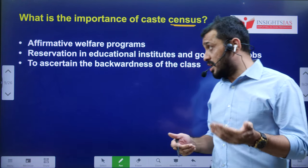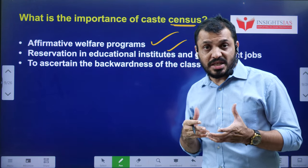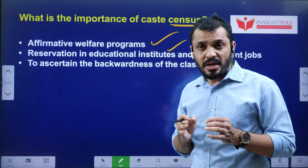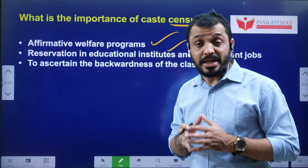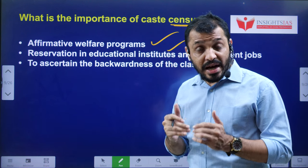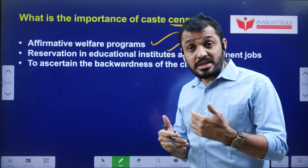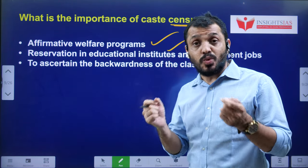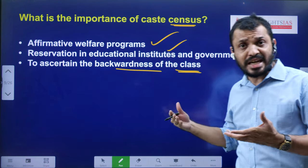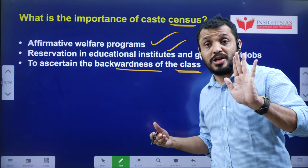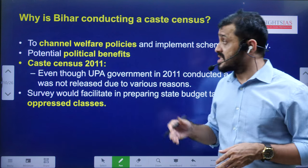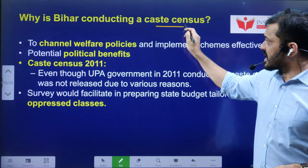Article 16 clause 4 clearly states that reservations in public employment related to SC, ST and socially and educationally backward classes shall continue until they are adequately represented. Adequate representation is determined based on population, for which you require the data. Additionally, to ascertain the backwardness of a class, if you have data you can demonstrate the gap between population share and opportunities — these are the significances of the caste survey.